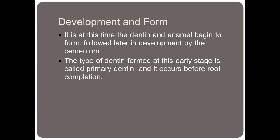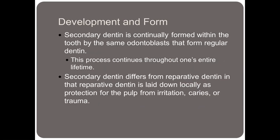It's at this time that the dentin and enamel begin to form, followed later in development by the cementum. The type of dentin formed at this early stage is called primary dentin, and it occurs before root completion. Secondary dentin is continually formed within the tooth by the same odontoblasts that form regular dentin, and this process continues throughout one's entire lifetime. Secondary dentin differs from reparative dentin in that reparative dentin is laid down locally as protection for the pulp from irritation, caries, or trauma.